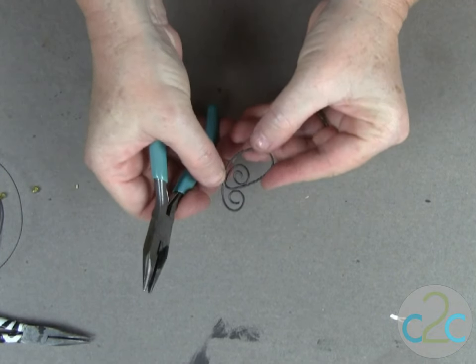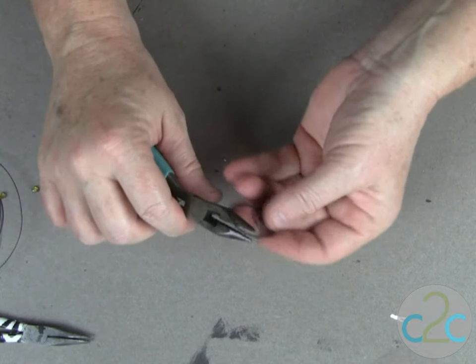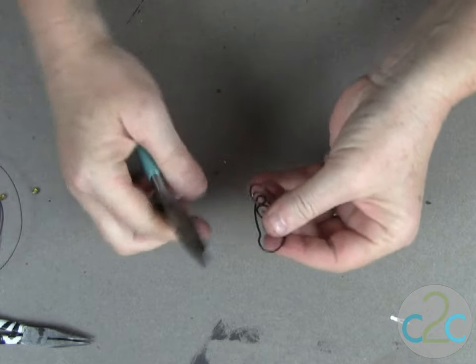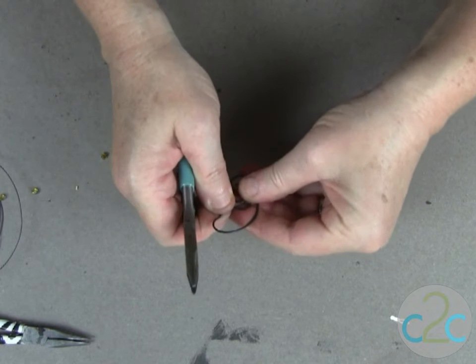Now I'm going to refine the shape a little bit just by coming in with my pliers, giving it a little tweak. You can refine the shape to more of a butterfly shape.